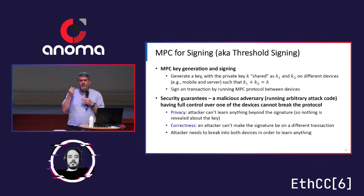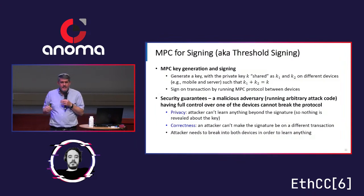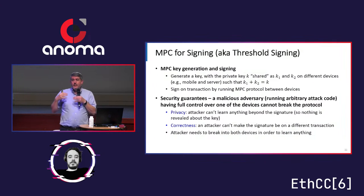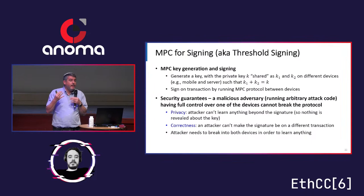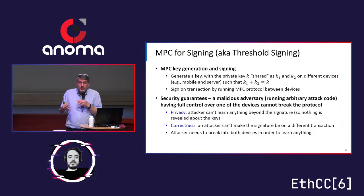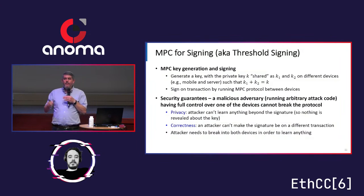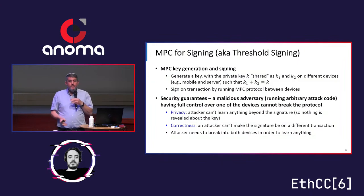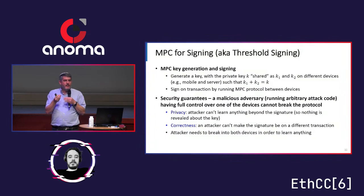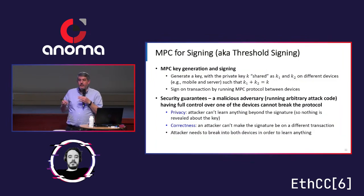What are the security guarantees? Think formally: there is some trusted party that we send key shares to and get back results. The first property is privacy, meaning nothing but the result is learned — you don't learn anything about the key. You get the signature, which is what you're supposed to get, but you don't learn anything else, so the key remains private. This holds even if one of the parties is completely corrupted and running malicious code to attack the protocol. They know exactly what the protocol is — the only thing they don't know is the secrets. That's the foundation of cryptography.